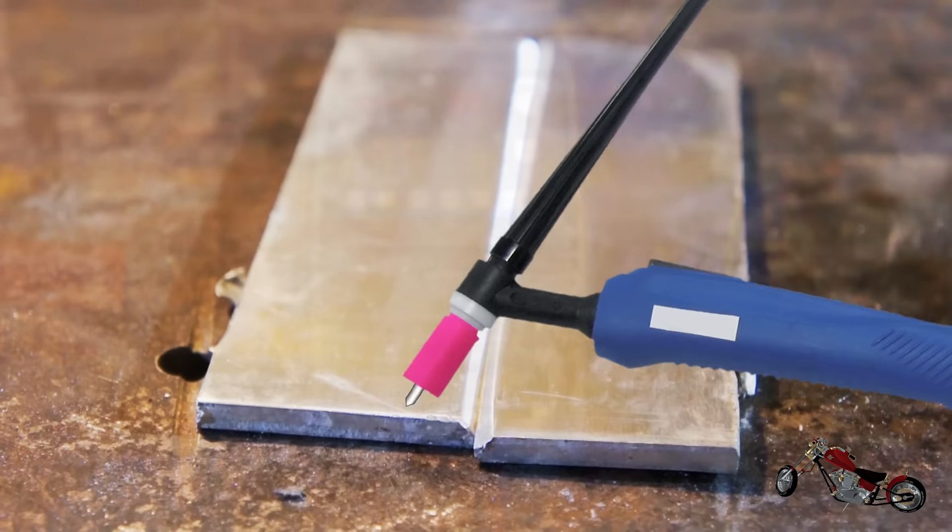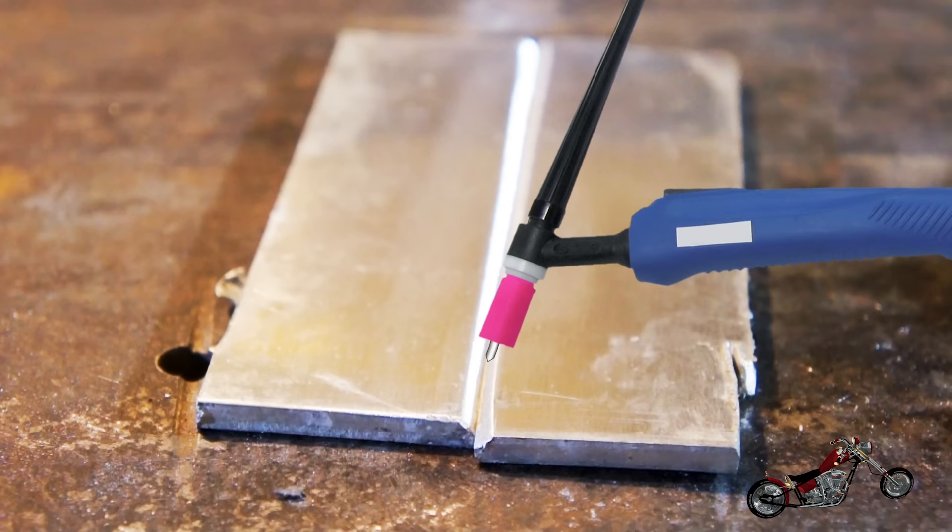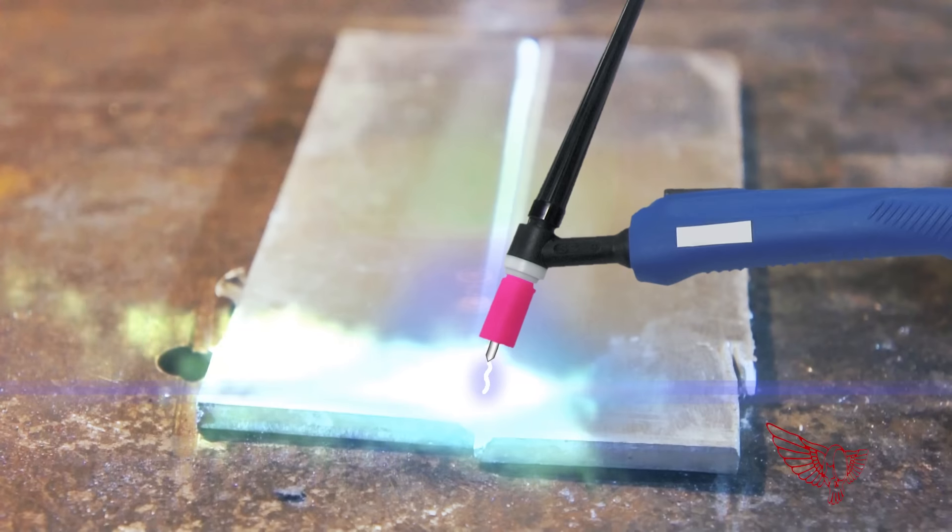Here's how it works. The electrode is charged with enough voltage to create an arc with the part and enough amperage to create the heat necessary to melt the parts that need to be welded together.